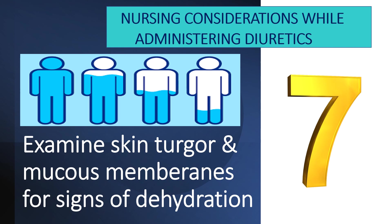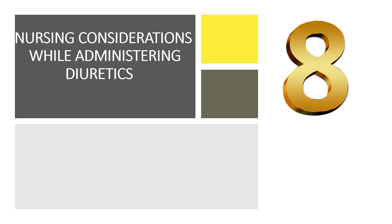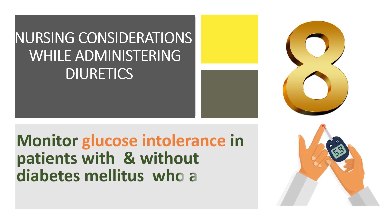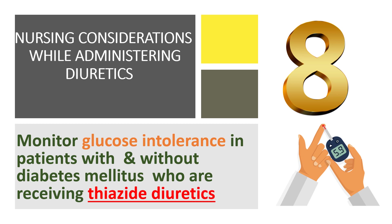Also check for signs of volume depletion such as postural hypotension, dizziness, and imbalance in your patient. Our next nursing responsibility is to monitor glucose intolerance in patients with and without diabetes mellitus, especially those receiving thiazide diuretics, because thiazide diuretics have a tendency to lower insulin levels and thus raise blood glucose levels in the patient.